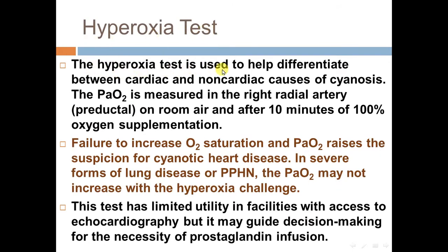The hyperoxia test is used to help differentiate between cardiac and non-cardiac causes of cyanosis. PaO2 is measured in the right radial artery pre-ductally on room air and after 10 minutes of 100% oxygen supplementation. Failure to increase oxygen saturation and PaO2 raises suspicion of cyanotic heart disease. In severe forms of lung disease or persistent pulmonary hypertension, PaO2 may not increase with the hyperoxia challenge. This test has limited utility in facilities with access to echocardiography, but it may guide decision-making for the necessity of prostaglandin infusion.